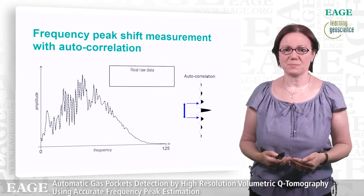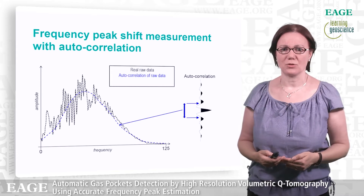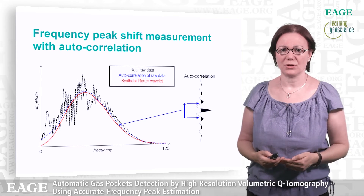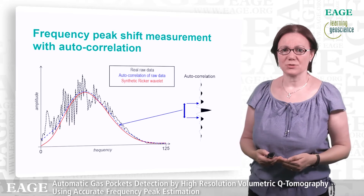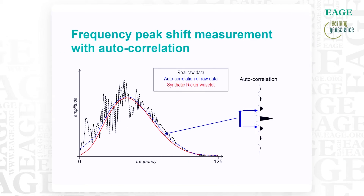Computing the spectrum of the autocorrelation in a window around the maximum peak, we obtain the blue curve. We can notice the good fitting with the real data and also the matching with the Ricker wavelet spectrum. This approach is easier and allows a more precise peaking of the frequency peak shift and, as a consequence, a more accurate Q estimation.